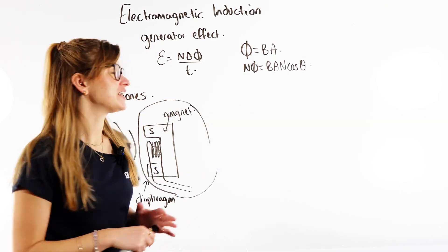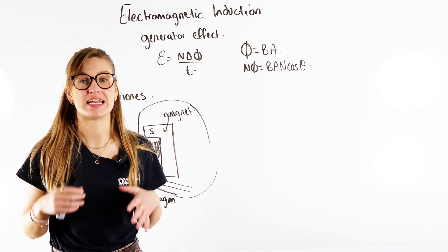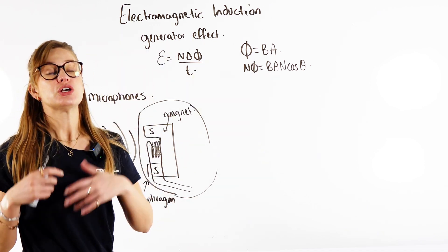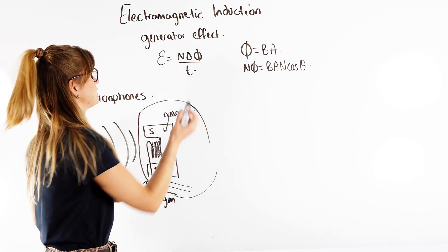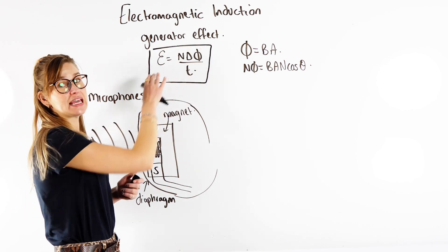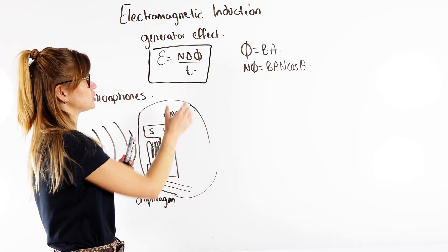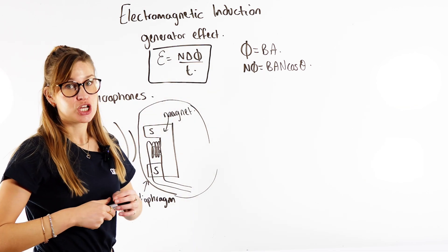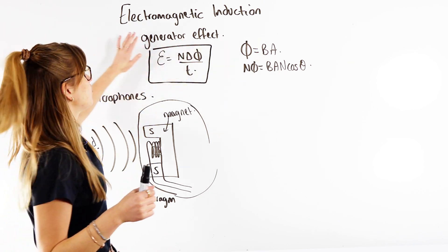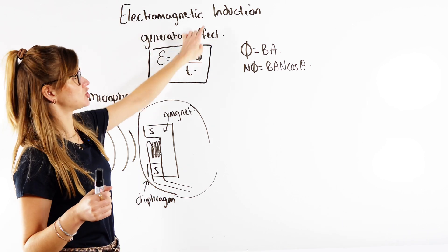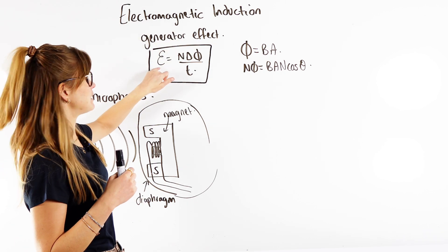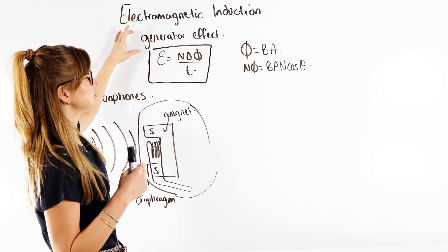So another video here just going over what electromagnetic induction is. Another way of calling electromagnetic induction is the generator effect. So the previous video we went over Faraday's law. Faraday's law states that the EMF induced is directly proportional to the rate of change of magnetic flux linkage. EMF is our electromagnetic force — it is induced, and we use this in the generator effect.